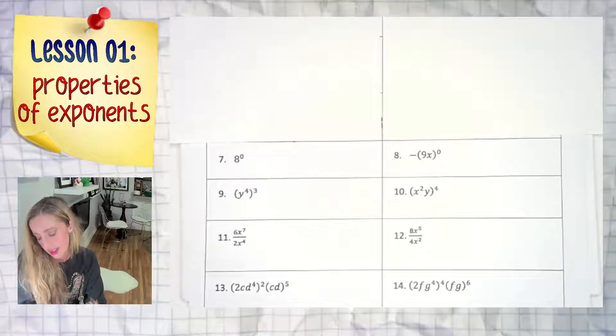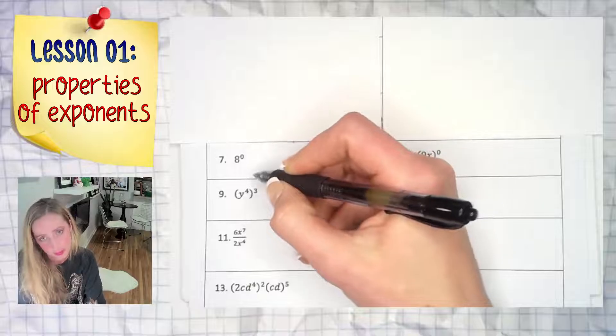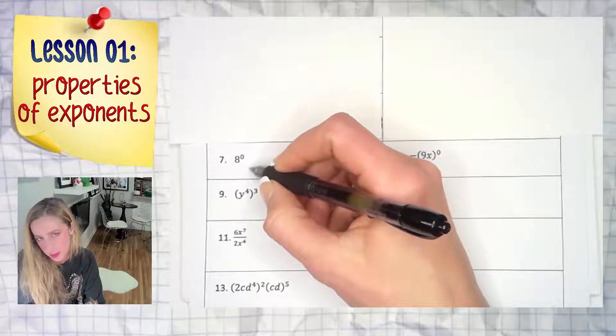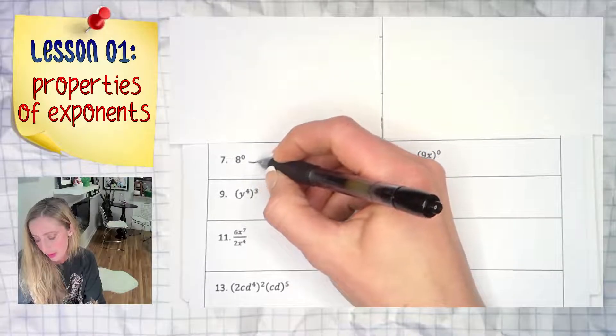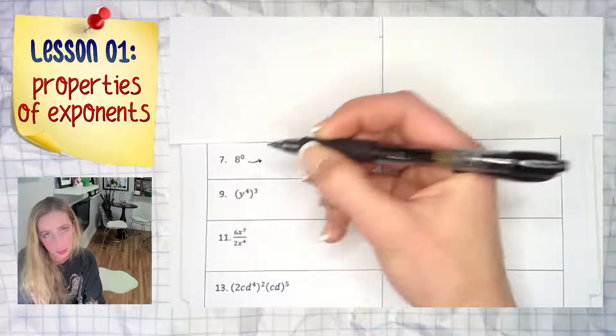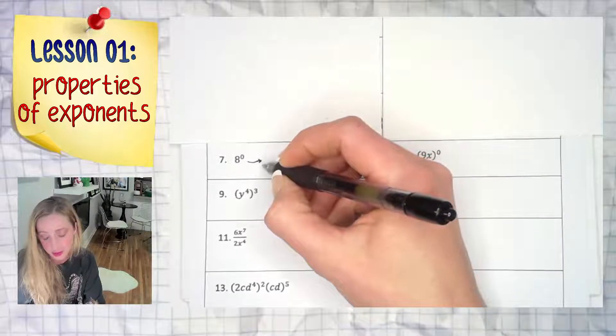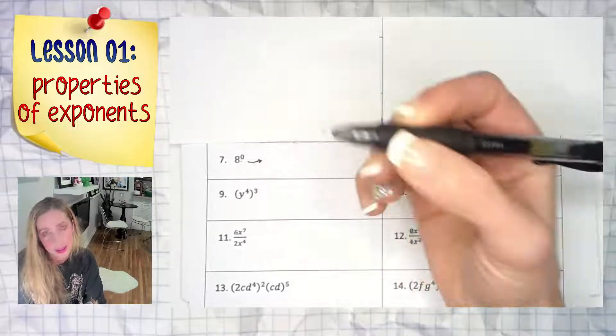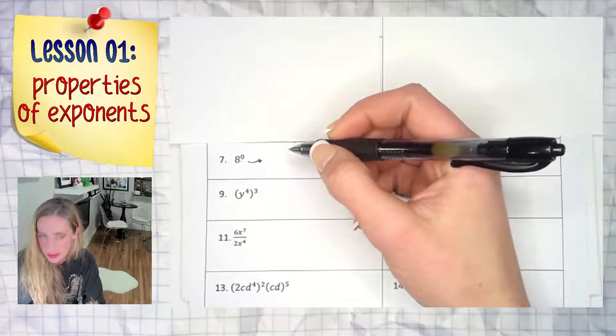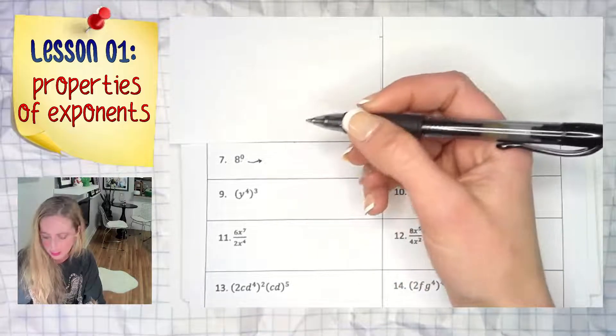Hey everybody, in this example we have a pretty classic but sometimes brain-teasing question: 8 to the zero power. What is that? Is that zero, is that one, is that eight, is that undefined?